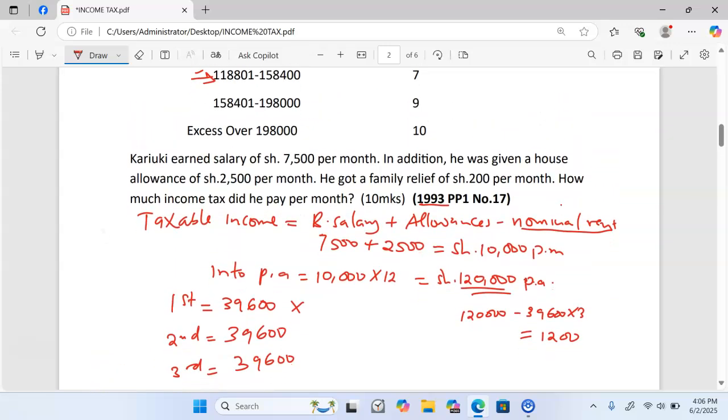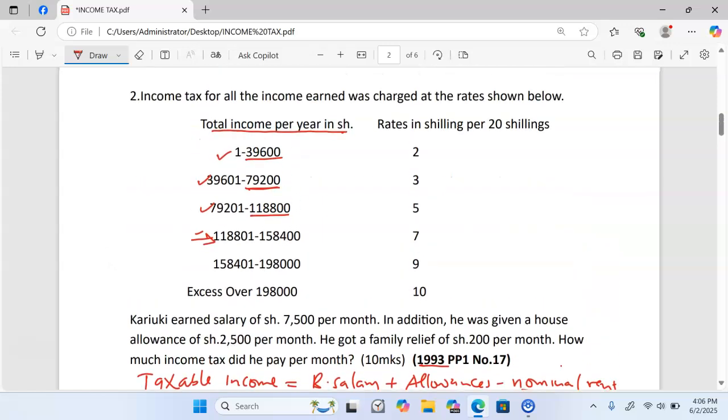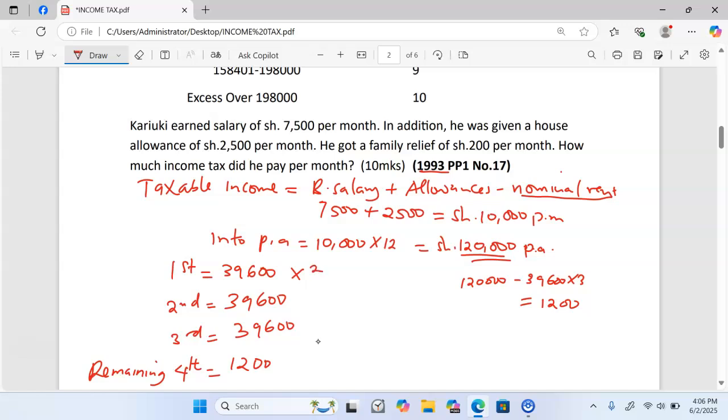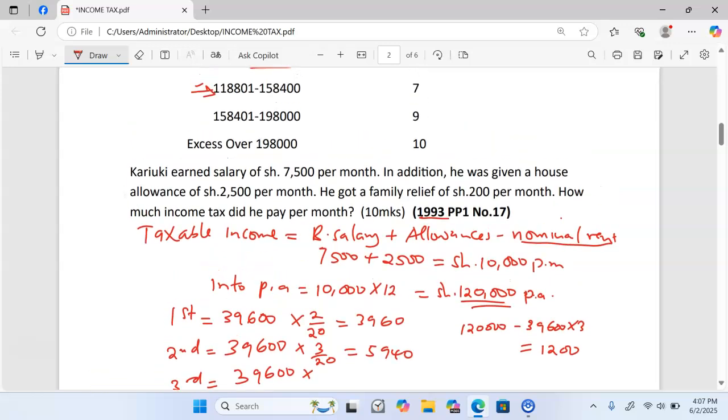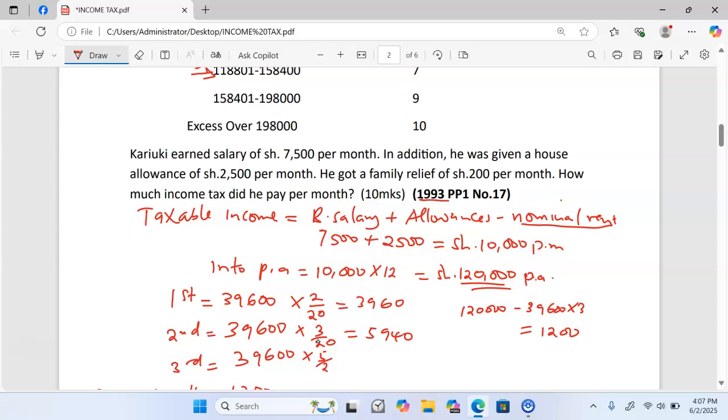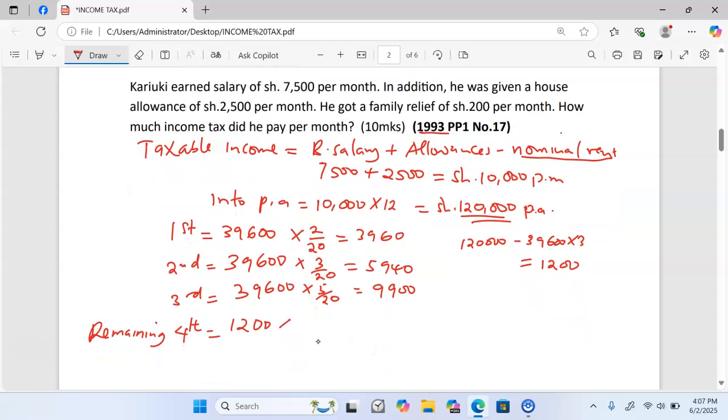So now we can proceed and get our taxes. In the first bracket we have 39,600. Remember the rate is 2 shillings for every 20 bob, so this one will be 2 out of 20 giving us 3,960. In the second bracket we are going to have 3 shillings for every 20 bob giving us 5,940. In the third bracket the rate is 5 shillings for every 20 shillings and this one is going to give us 9,900. And in the last bracket, 7 shillings for every 20 bob, and this one is going to give us exactly 420 shillings.